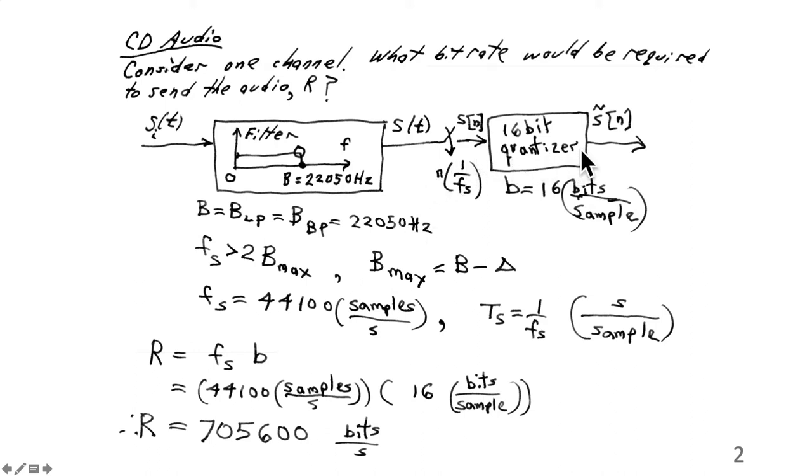The CD audio uses 16-bit linear quantizers, linear analog-to-digital converters. The bitrate required to represent this signal sampled at 44,100 samples per second and 16 bits per sample is here. R is FsB, 44,100 samples per second, 16 bits per sample, giving R as 705,600 bits per second. That is the bitrate required to represent one channel of CD audio with this bandwidth, 22,050 Hz, and a 16-bit quantizer.